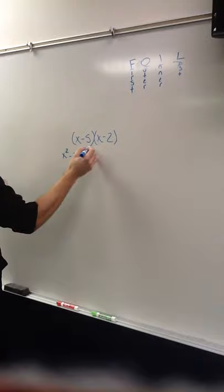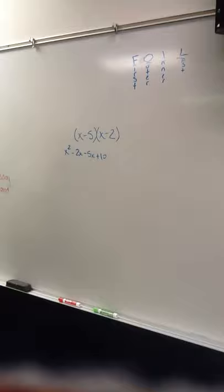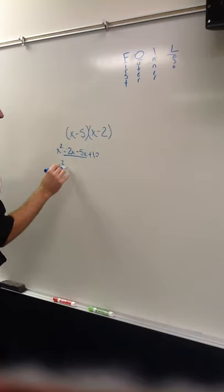And then, the last is negative 5, negative 2, so that'd be positive 10, because 2 negatives equal to positive. So, again, just combine like terms, you get x squared minus 7x plus 10.